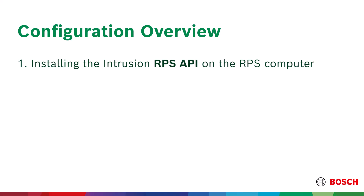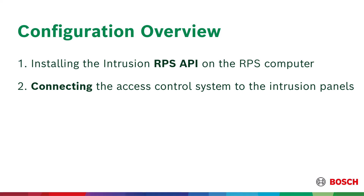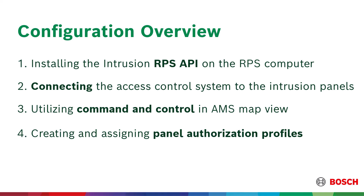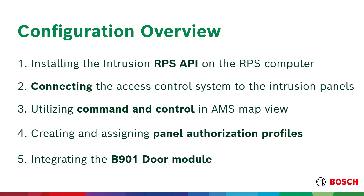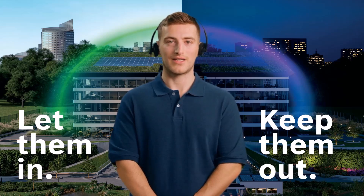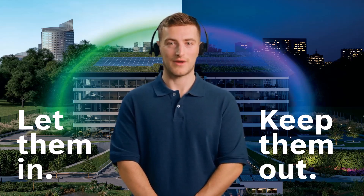The configuration process consists of the following stages: 1. Installing the Intrusion RPS API on the RPS computer. 2. Connecting the access control system to the intrusion panels. 3. Utilizing command and control in AMS map view. 4. Creating panel authorization profiles and assigning them to cardholders. 5. Integrating the B901 door module. The videos in this series will demonstrate each of these processes. That concludes this introduction. In the next video, you will see how to install the RPS API.